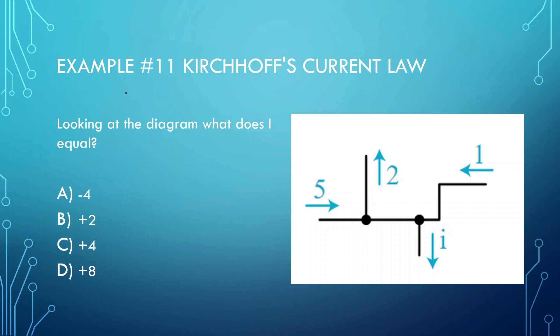Hello everybody, so today we're going to be talking about Kirchhoff's Current Law and Voltage Law. Look at the diagram — what does I equal? What we need to know is that at each one of these junctions, the same amount that goes in has to be the same amount that goes out.